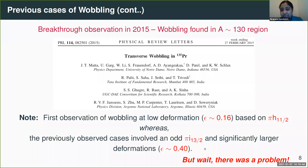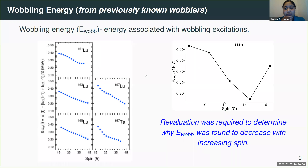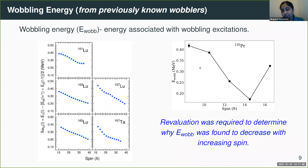There was a problem: when talking about simple wobblers, wobbling energy was predicted to increase with increasing spin. However, the experimental wobbling energy for the five nuclei in the mass-160 region and 135 praseodymium all exhibited a decreasing trend with increasing spin. A re-evaluation was required to determine why there was a discrepancy between the theoretical prediction and experiment.